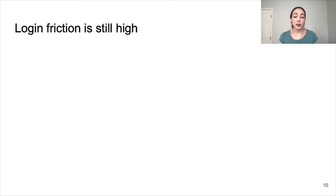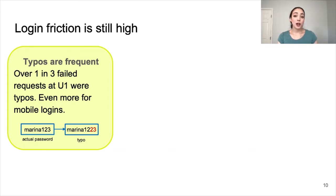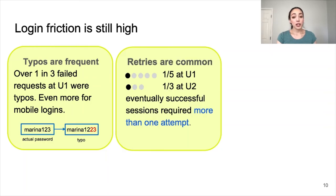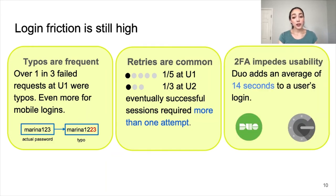We then performed analysis on the remaining non-attack data. We found that login friction is still high. Typos are even more common than reported in prior work — over one in three failed requests at University 1 were typos, and even more were for mobile logins. Retries were also very common: one out of five eventually successful sessions at University 1, and one out of three at University 2 required more than one attempt. Two-factor authentication also impedes usability, adding an average of 14 seconds to a user's login for a dual push.